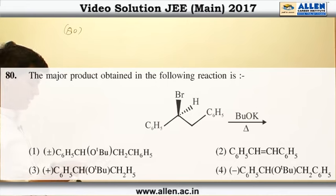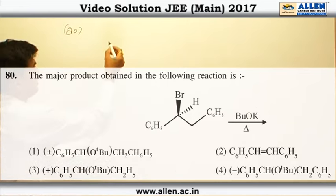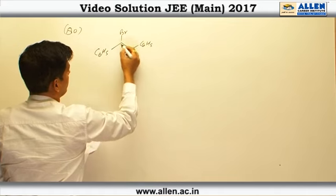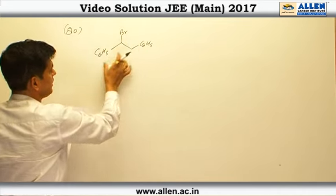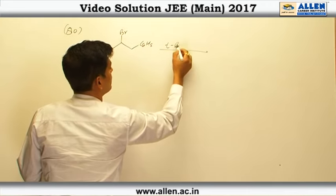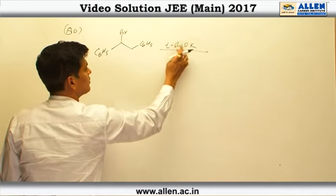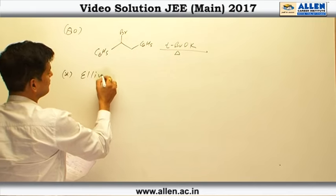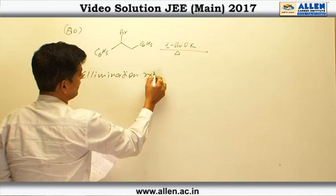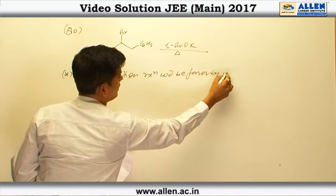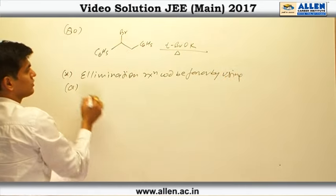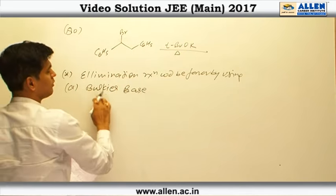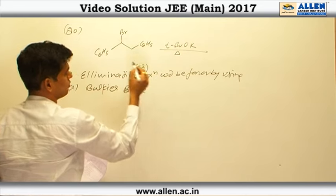Question 80: the major product obtained in the following reaction. The reaction includes an alkyl bromide with two phenyl rings, and potassium tert-butoxide along with heat. As we know, elimination reaction is favored by using a bulkier base — using a bulky base favors the E2 (bimolecular elimination) reaction.